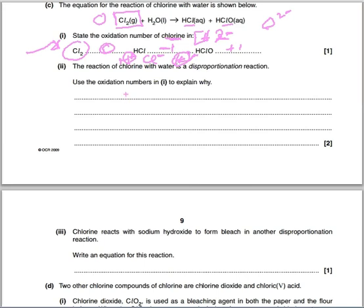So what we could write here is it has been oxidized and reduced at the same time. It's been oxidized and reduced at the same time, and it's gone from, or chlorine has gone from a zero at the start